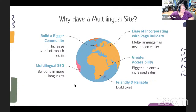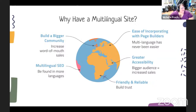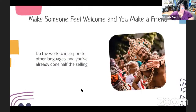You can build a bigger community when you present your website in someone's language. That multilingual SEO helps you be found in more languages. You can use page builders and decide how your website is displayed. It gives you greater accessibility to more people, and it's friendly and reliable — it builds trust when people can see what you have in their own language.